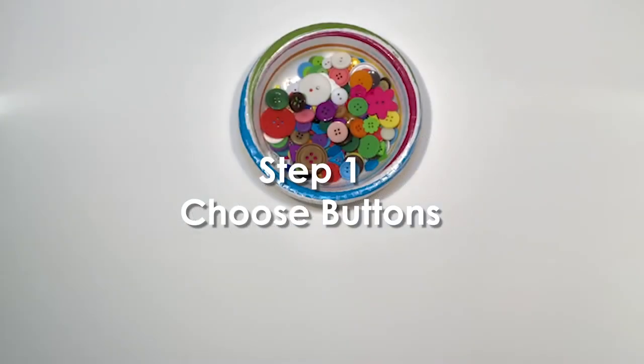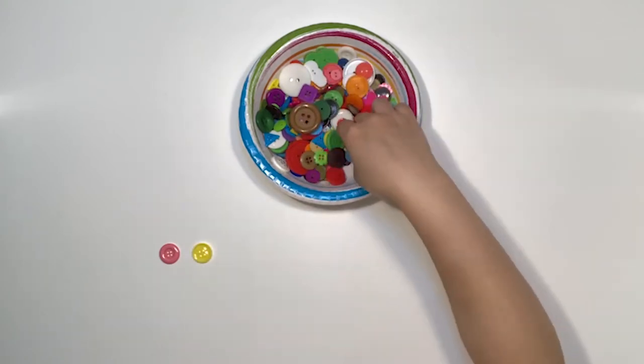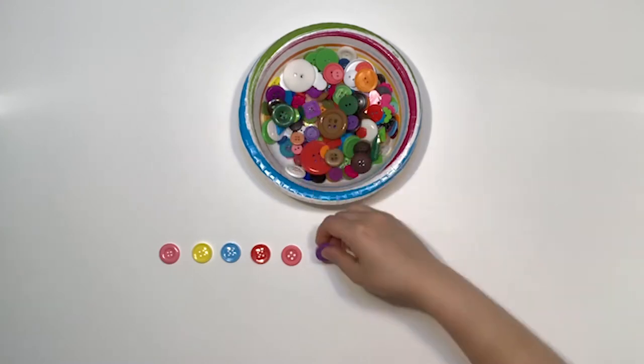Step 1: Choose buttons. We are going to begin our project by picking out some buttons. Your necklace can have as few or as many as you want. Just keep in mind that your necklace should have an odd number of buttons.